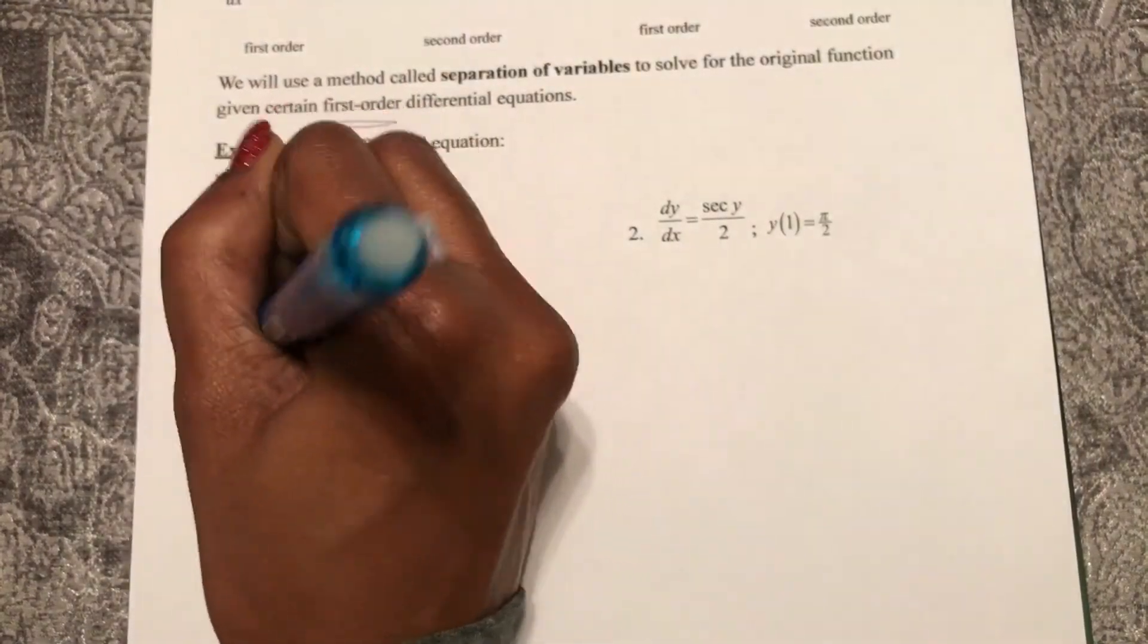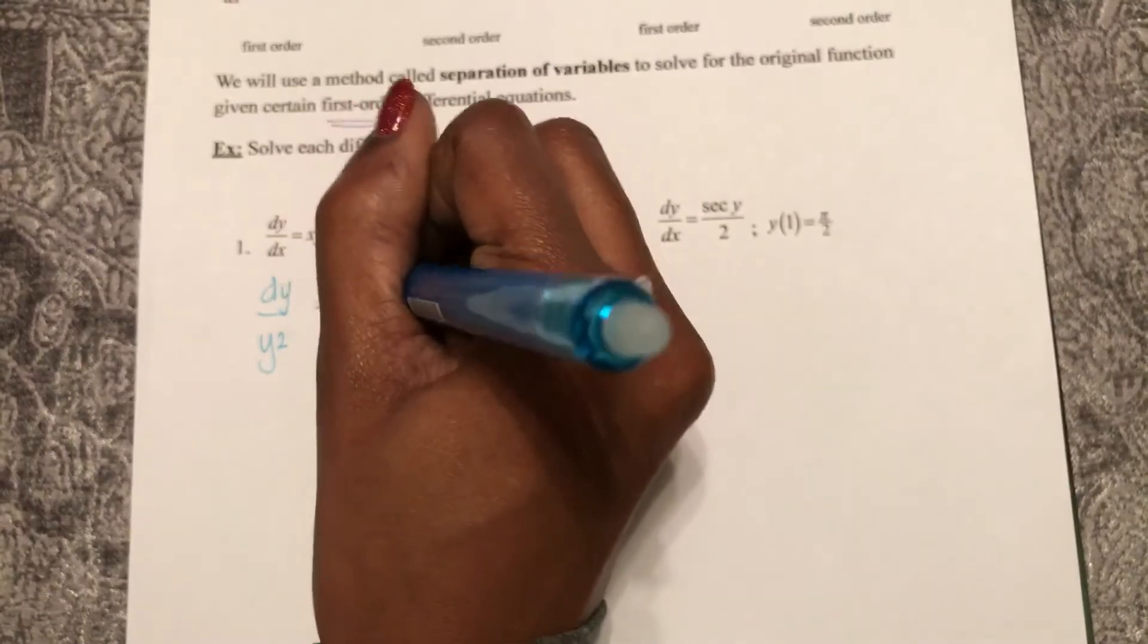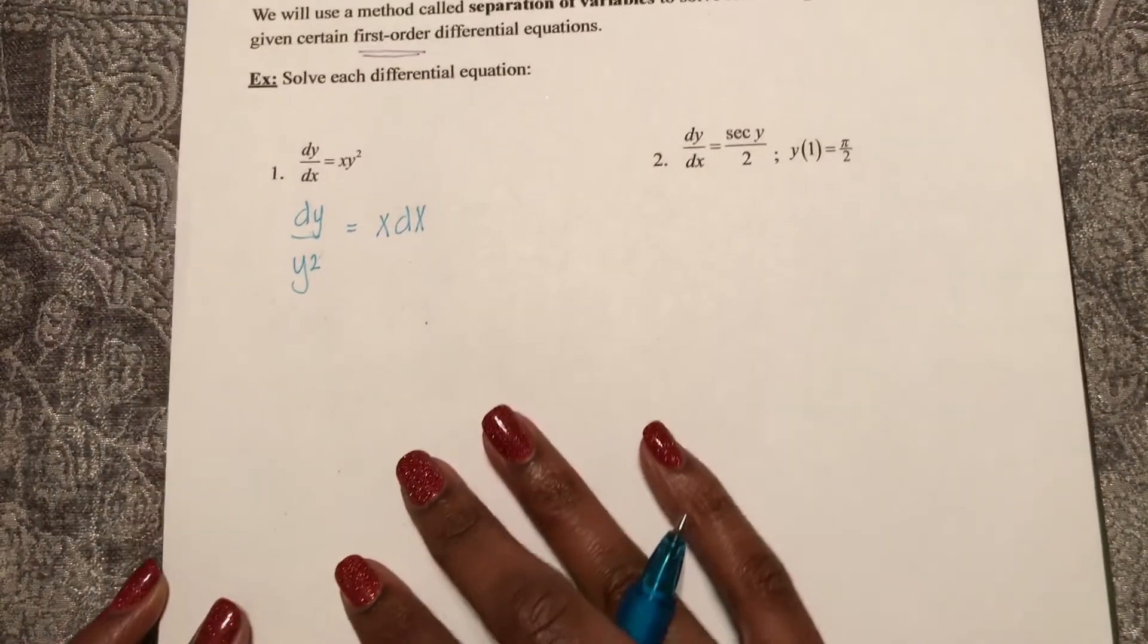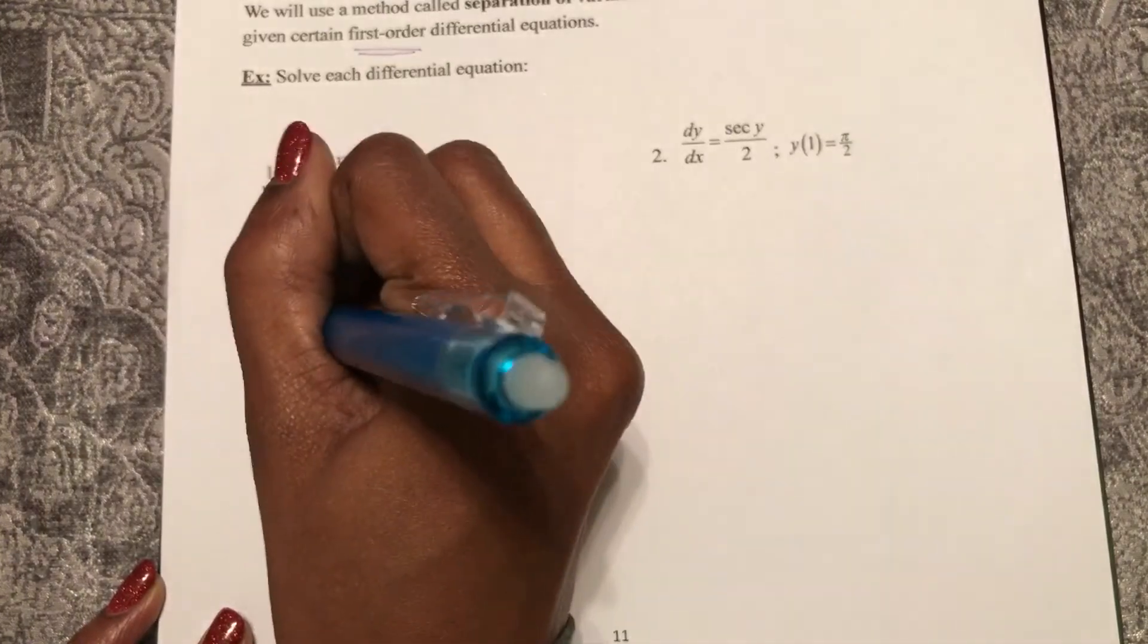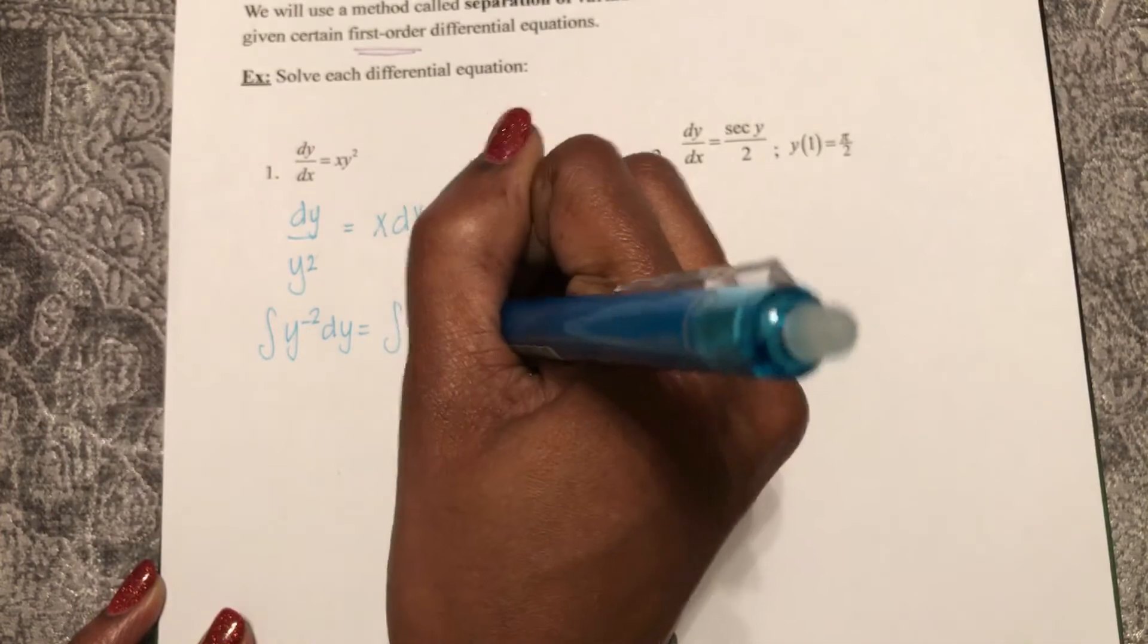I'll do so by dividing y squared to this side and multiplying dx to the other. From here, I can integrate both sides. Integrate of y to the negative 2 dy equals the integral of x dx.